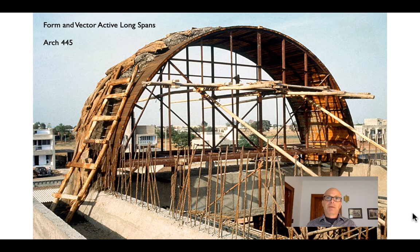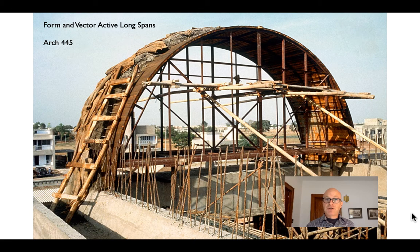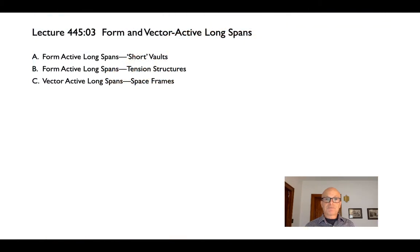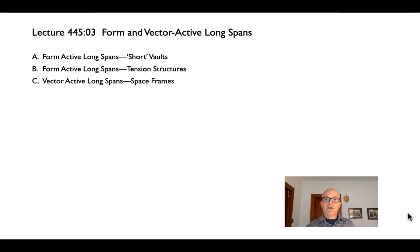So these are two different types, but because we've looked at both of them before, we're going to combine them when we look at long spans and look at basically the qualitative aspects — what we're looking for when we design them, the basic mechanics, what happens when we blow them up to slightly larger scales. We'll look at two types of form active structures: short vaults and tension structures — cable structures used architecturally instead of just in bridges — and then vector active long spans, trusses set at angles to one another that make space frames.